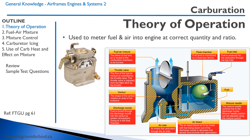From there, the fuel travels along to the jets. Then the air comes in — it's ram air, so you have a lot of air coming in. You have a venturi, and a venturi creates a negative pressure. This negative pressure sucks the fuel from the carburetor and the fuel gets atomized at the discharge nozzle. Up here we have the throttle valve or butterfly valve, which regulates the amount of fuel-air mixture going to the intake port.